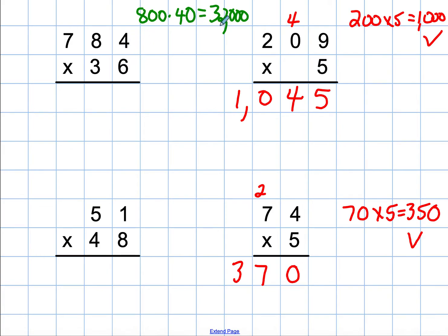Now I rounded both of those up, so I think 32,000 is going to be too high. Now let's look at the multiplication itself. I start by ignoring the 3. I'm just going to do 6 times 4 is 24. 6 times 8 is 48, plus 2 more would be 50. And then 6 times 7 is 42, plus 5 is 47.